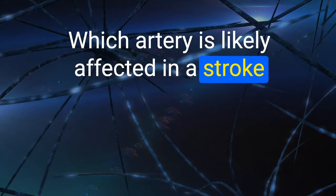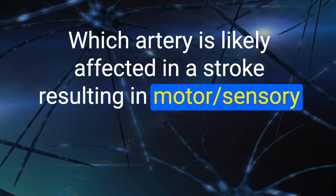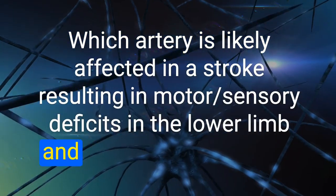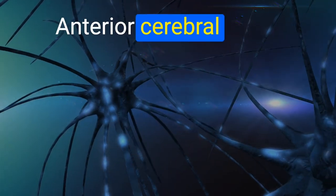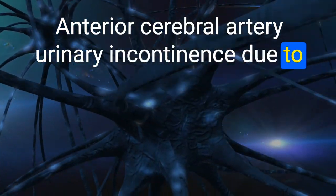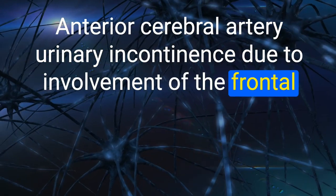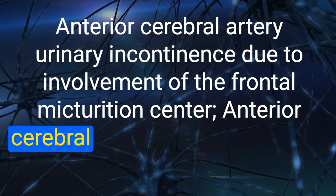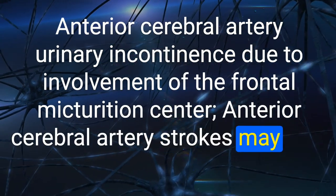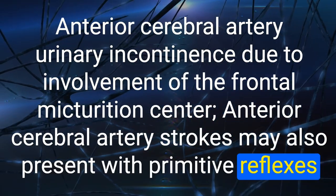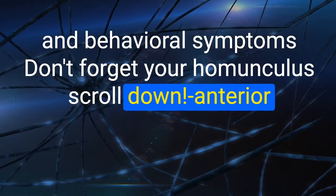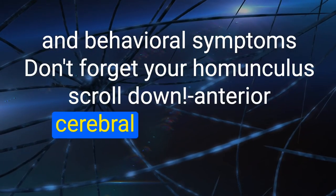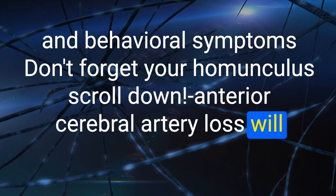67. Which artery is likely affected in a stroke resulting in motor and sensory deficits in the lower limb and urinary incontinence? Anterior cerebral artery — urinary incontinence is due to involvement of the frontal micturition center. ACA strokes may also present with primitive reflexes and behavioral symptoms. The ACA supplies the lower extremities (remember the homunculus).